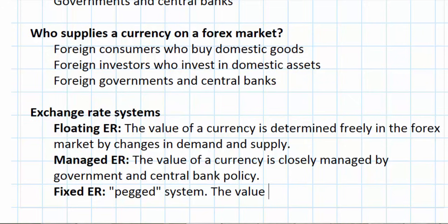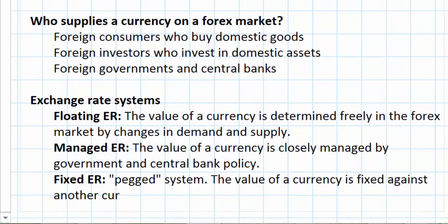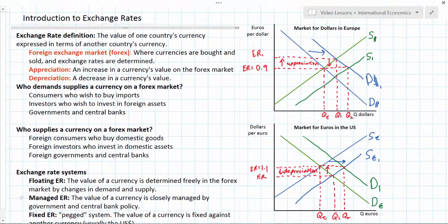To recap: we've defined exchange rates, looked at two forex markets, and shown how a currency's value changes due to shifts in demand or supply, resulting in appreciation or depreciation. We've explained that consumers, investors, governments and central banks are the primary stakeholders who demand and supply currencies. Exchange rates matter because nations trade with one another using different currencies, requiring currency exchange. Without exchange rates there'd be no way of knowing the value of one country's output in terms of another's, and we need to know how much our home currency is worth when we travel or buy imports.